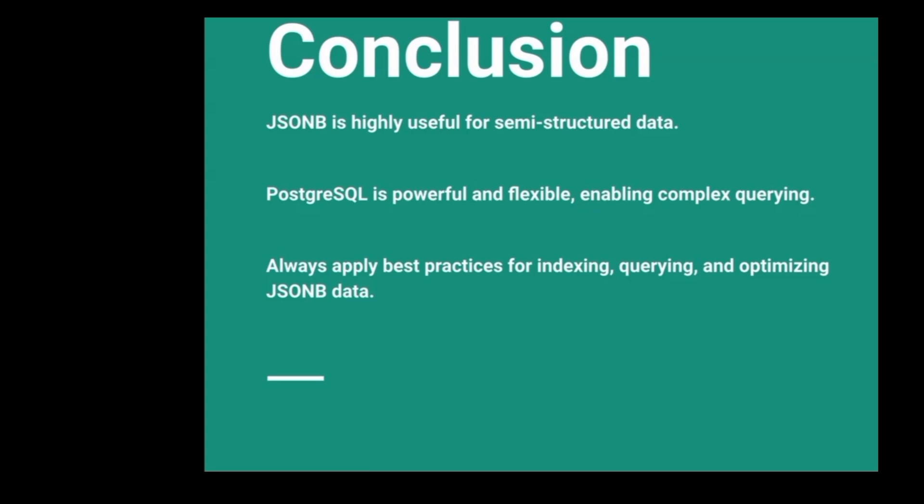To wrap up, let's highlight some key points. JSONB is highly useful for managing semi-structured data, allowing for efficient storage and retrieval of complex data types. PostgreSQL stands out as a powerful and flexible database system, enabling complex querying capabilities that can handle diverse data structures. Always remember to apply best practices for indexing, querying, and optimizing JSONB data to ensure your applications run smoothly and efficiently. Thanks for watching — if you found this video helpful, please like and subscribe for more insights.